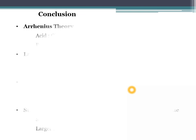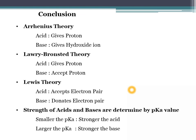In conclusion, we learned four key things: according to Arrhenius theory, an acid gives H⁺ and a base gives hydroxide ion; according to Lowry-Brønsted theory, an acid donates a proton and a base accepts a proton; according to Lewis theory, an acid accepts an electron pair and a base donates an electron pair; and the strength of acids and bases is determined by the pKa value — the smaller the pKa value, the stronger the acid, and the larger the pKa value, the stronger the base. Thank you.